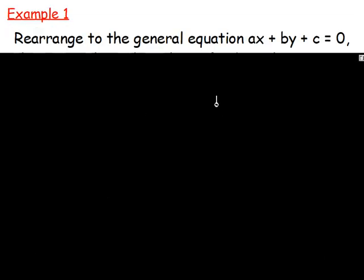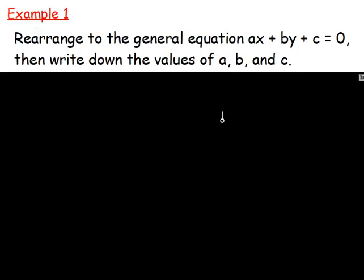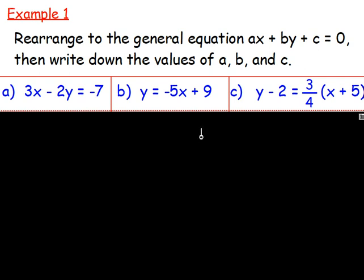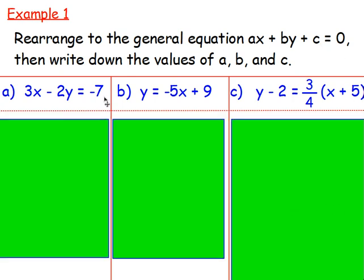Example 1: rearrange to the general equation ax plus by plus c equals 0, then write down the values of a, b, and c. I'm going to give you three equations and rearrange them so they look like: something x plus something y plus something equals 0.